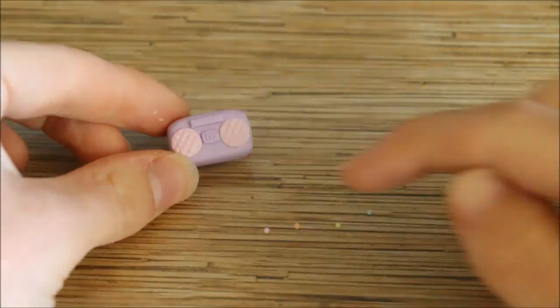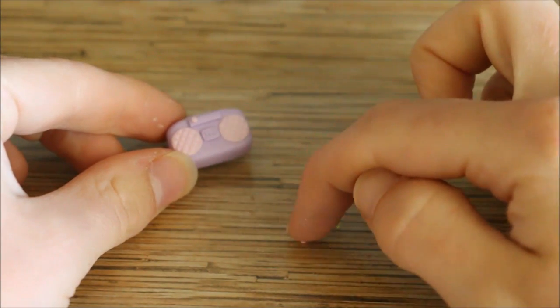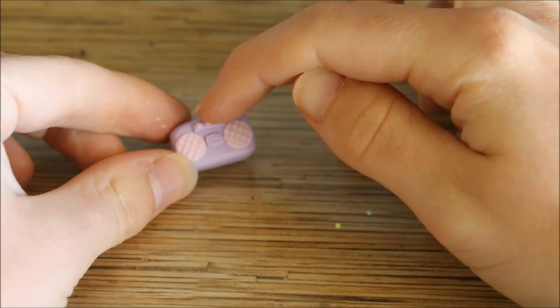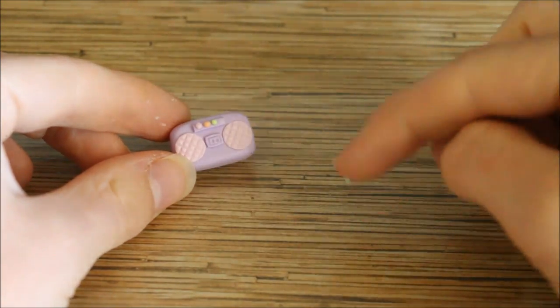To make the buttons I rolled out some small balls of different colored clay. I used some pastel colors to go with the theme and then placed these along the strip, and you can also indent those as well using a dotting tool.